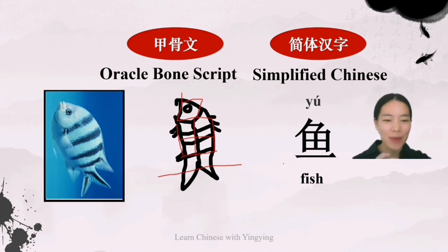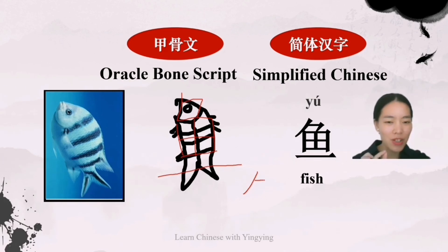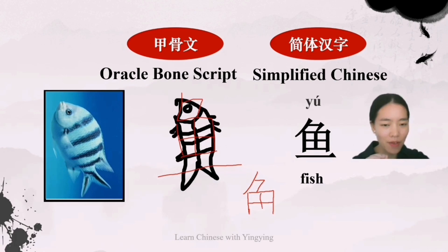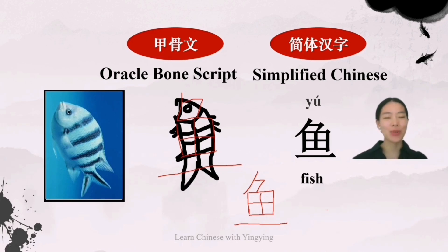Let's write it together from top to bottom. The first stroke is a left swing, a short one, and a short line with a sharp turn into a slant to the left. Then a vertical line, a horizontal line of quite the same length with a sharp turn into a vertical line, then a horizontal line, a vertical line, and a horizontal line to close it up. The last one is a long horizontal line. Here we have it — the word 鱼 (yú), it means fish.